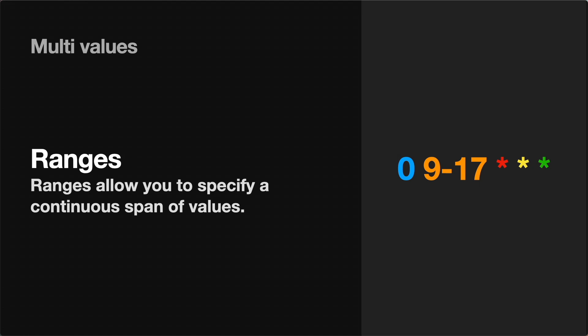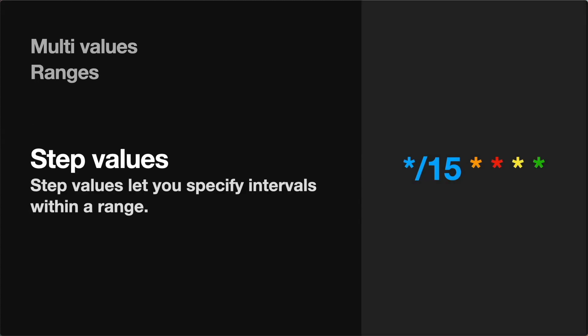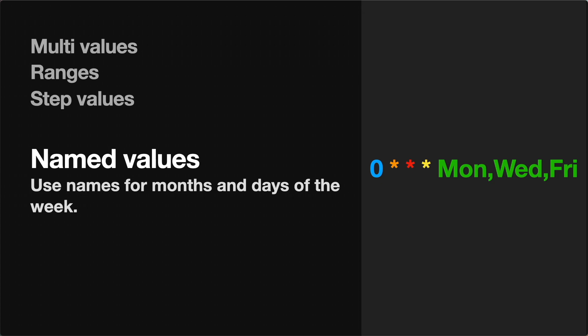Next up, we have ranges. If you want your job to run only within specific minute, hour, or month ranges, you can specify a range of numbers. The specific syntax shown will run the associated job on the hour between 9 a.m. and 5 p.m. Next up, we have step values. What a step value lets you do is run a job at specific intervals within a slot — for example, running a job every 15 minutes on the hour. And then finally, we have named values. For the days of the week and the months, you can use the names of those values instead of their numeric representatives — for instance, running every single hour but only on Monday, Wednesday, and Friday.